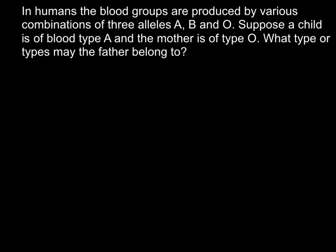Hi, today's problem is: in humans the blood groups are produced by various combinations of three alleles A, B and O. Suppose a child is of blood type A and the mother is of type O. What type or types may the father belong to?